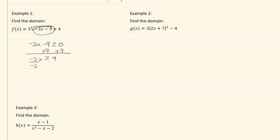Divide by negative three, and because we divided by a negative, our inequality is going to flip the other direction, and we're going to get x has to be less than or equal to negative three. That is our domain.